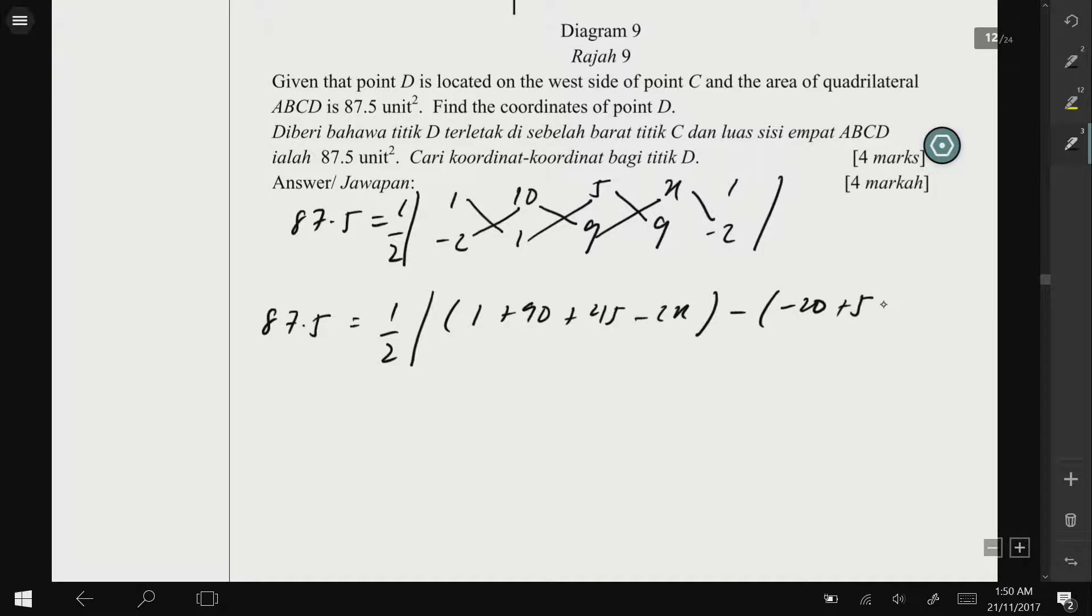Plus 5, plus 5, plus 9x, plus 9. Now eliminating 2 here because it is a denominator, we should get 175.